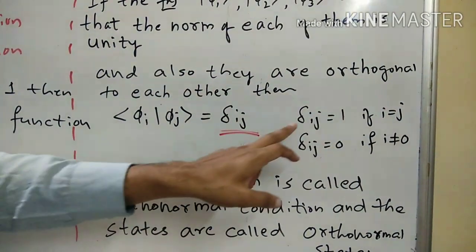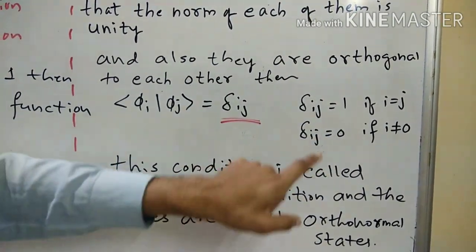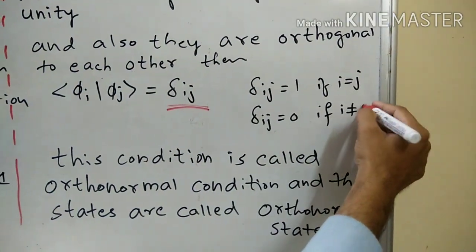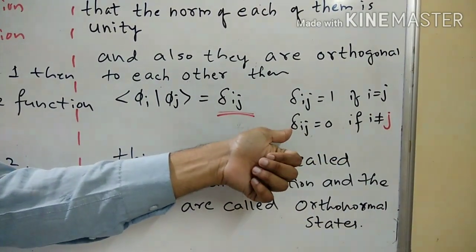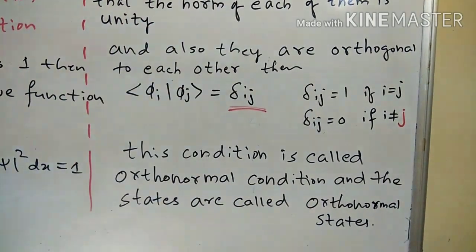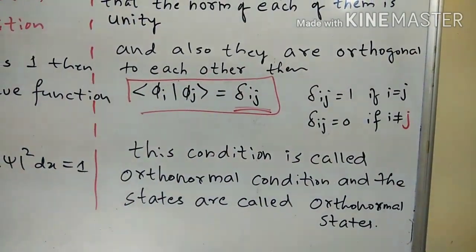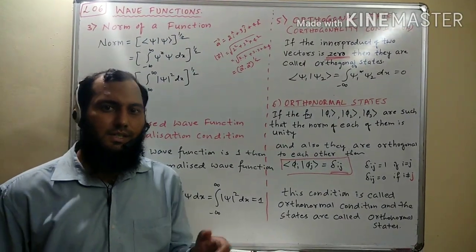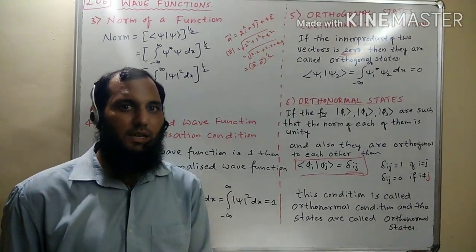The Kronecker delta delta-ij equals 1 if i equals j — meaning if I take the inner product of phi1 with phi1 it will be 1, which is the normalization condition. And delta-ij equals 0 if i is not equal to j — meaning if I take the inner product of phi1 and phi2 it will be 0, which is the orthogonality condition. If both these conditions are satisfied, this combined condition is called the orthonormal condition and the states are called orthonormal states. In the next lecture we will see operators — the definition and properties of operators.